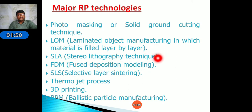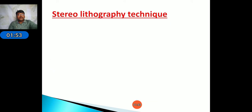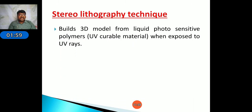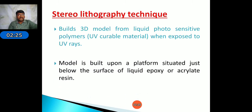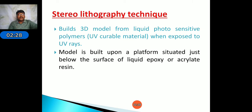From our subject's point of view, we will discuss two techniques: SLA and FDM. Starting with Stereolithography — this technique builds 3D models from liquid photosensitive polymers, that is UV-curable material. When UV rays are applied to the liquid, it converts and creates a solid material layer. Using this principle, we create prototypes.